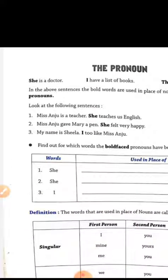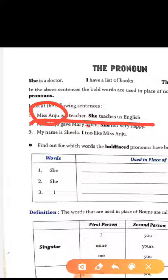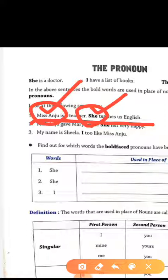Let's see some more examples. First: Miss Anju is a teacher. She teaches us English. So we have two sentences — the first uses the proper name Miss Anju, and in the second sentence we have written she in the place of Miss Anju. So she is the pronoun.